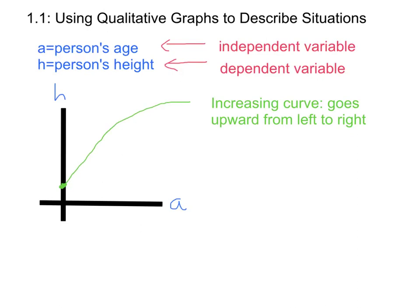Now this is called an increasing curve, because it goes upward from left to right. It's also important to realize that this point right here is a special point, and it's called an intercept. This particular intercept would be called the h-intercept, because that's where the curve crosses the h-axis. In this case, there is no a-intercept, because the curve never crosses or touches the a-axis.